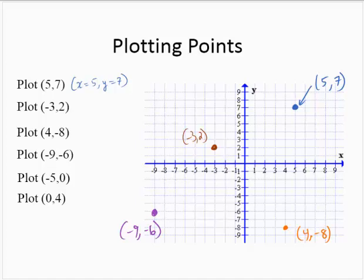Other points can also be defined where one or both of the coordinates is 0. So for example, the point (-5, 0) says the x-coordinate is negative 5 and the y-coordinate is 0. Here's where the y-coordinate is 0 — it's tough to see because it overlaps the x-axis. So the point (-5, 0) is right here.